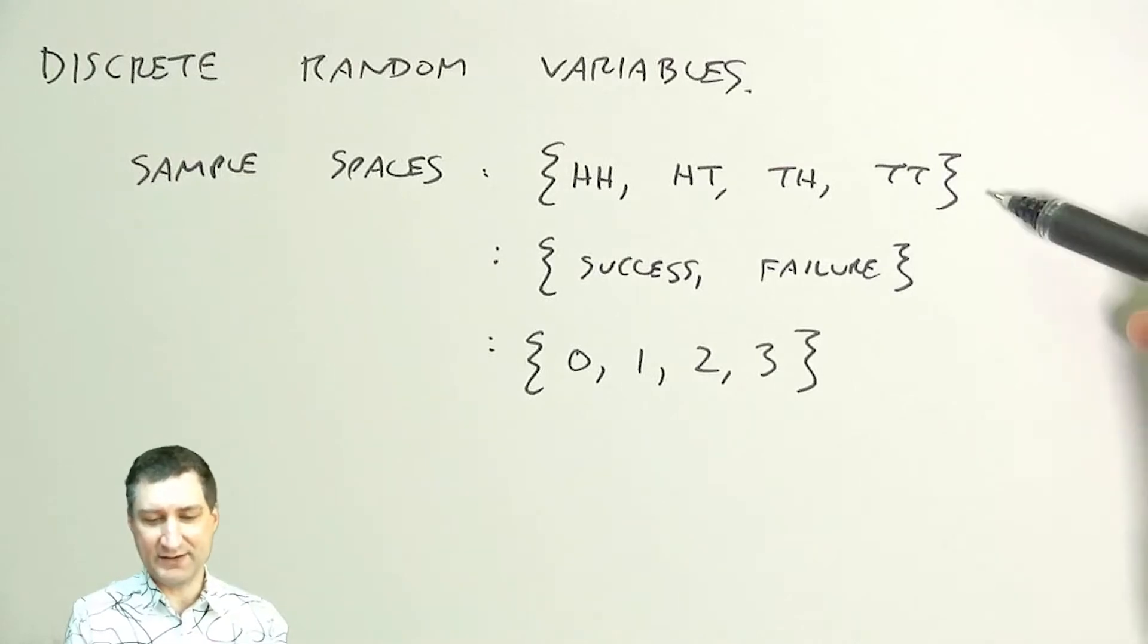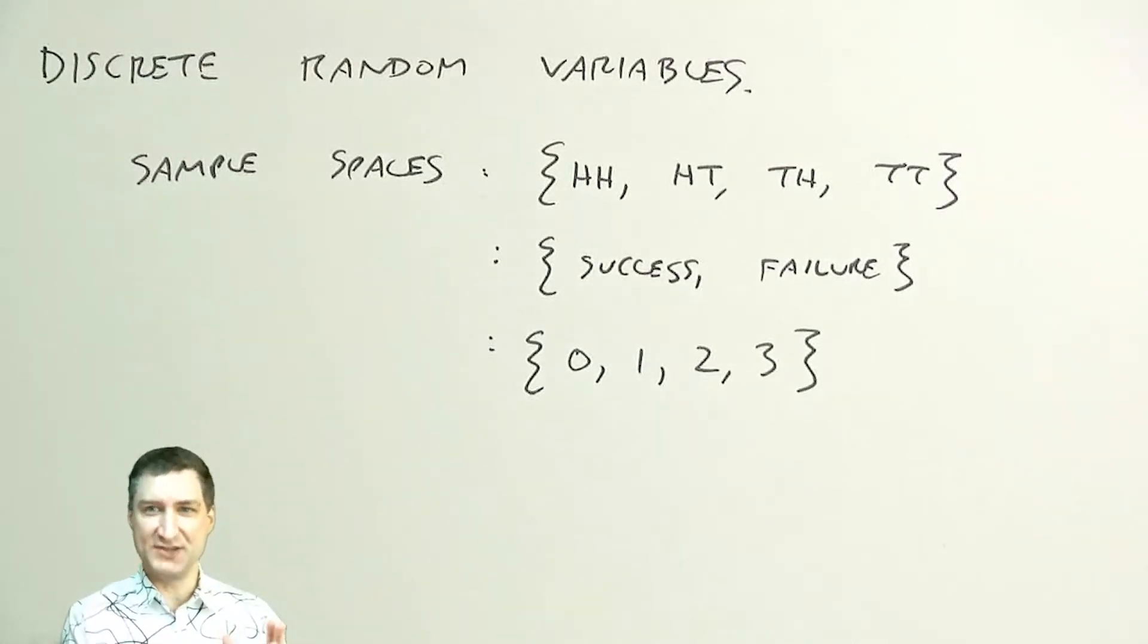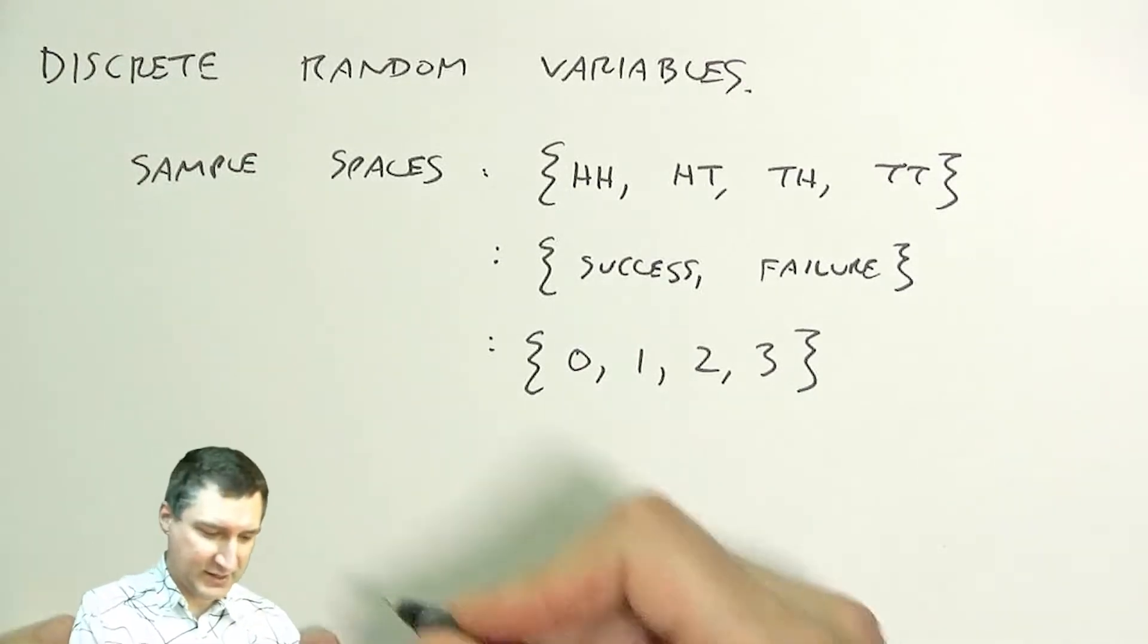It's not really that easy to deal with sample spaces made up of symbols like head-tail patterns or words like success-failure. So from now on, we are going to exclusively focus on situations where we derive a numerical number from the outcome of an experiment.